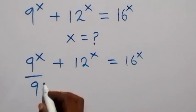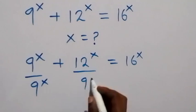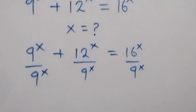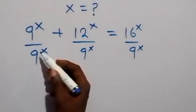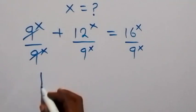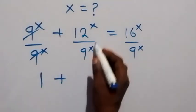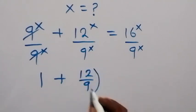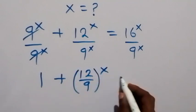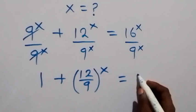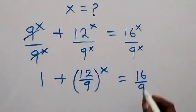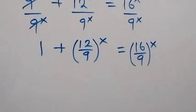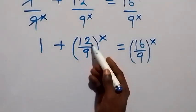We divide each term by 9^x. The 9^x terms cancel each other, leaving 1 plus — with the power of x common — we can write it as (12 over 9) all raised to power x, which equals (16 over 9) raised to power x.